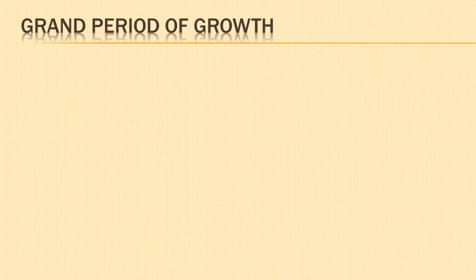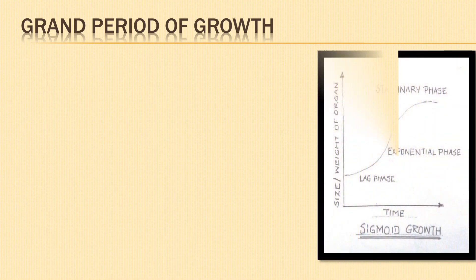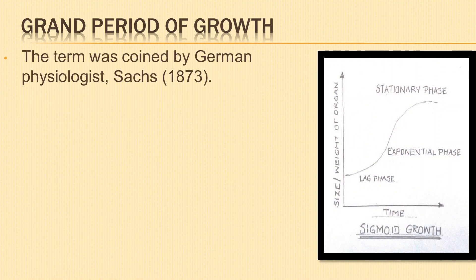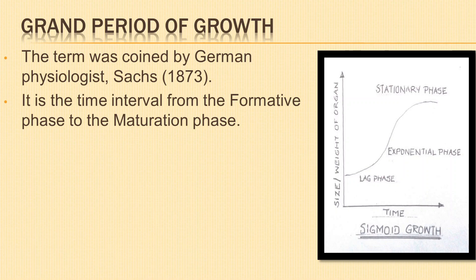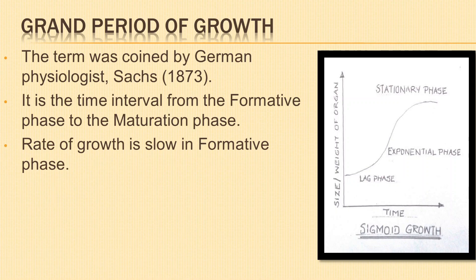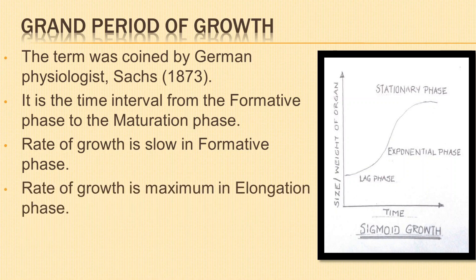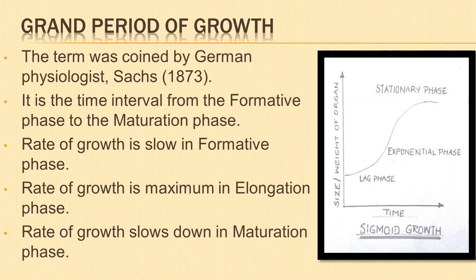Next is grand period of growth. The term grand period of growth was given by the German physiologist Sachs in 1873. The time interval from the formative phase to maturation phase is called the grand period of growth. The rate of growth varies from phase to phase — it is slow during the formative phase, becomes maximum during the elongation phase, and then gradually slows down during the maturation phase till it stops. The total time required for the completion of the three phases is the grand period of growth.